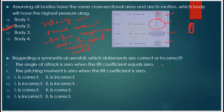Next question: regarding a symmetrical airfoil, which statements are correct or incorrect? Statement one: the angle of attack is zero when the lift coefficient is equal to zero. For a symmetrical airfoil, this is correct. Statement two: the pitching moment is zero when the lift coefficient is zero. For a symmetrical airfoil, this is also correct.